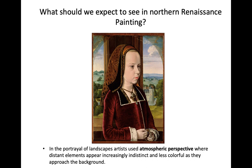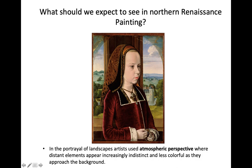In the portrayal of landscapes, artists use atmospheric perspective, where distant elements appear increasingly indistinct and less colorful as they approach the background. You can see in the background here that there is a use of atmospheric perspective — and since I don't have my laser pointer, we can just sort of show you this way.